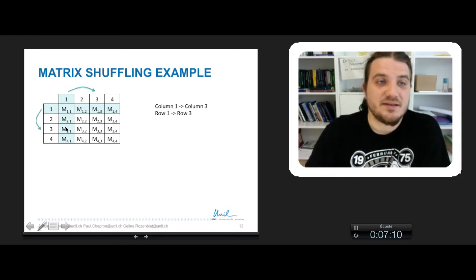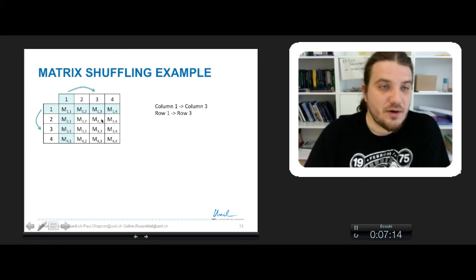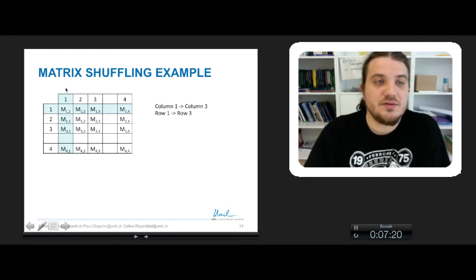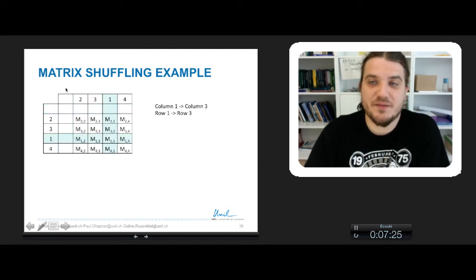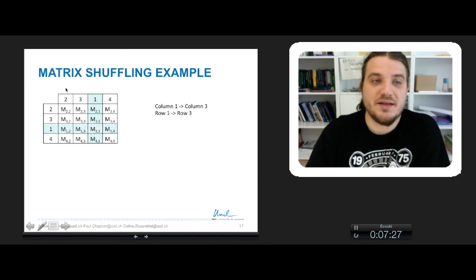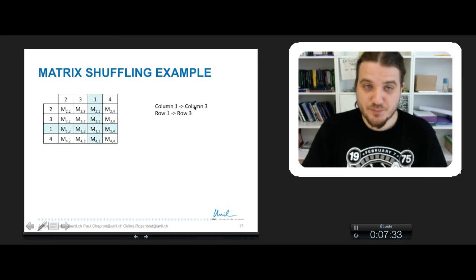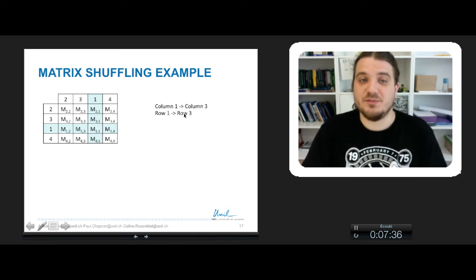Basically we want to take that and put it here, and take that and put it here. Here is a graphical representation. Let's say that we make an empty column and an empty row, so you take the column and you put it here, and you take the row and you put it here. You can remove the blank space, and we have a shuffled matrix where column 1 has been permuted with column 3, and row 1 has been permuted with row 3.